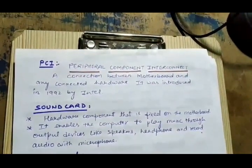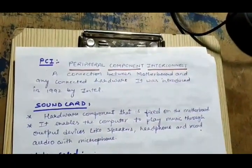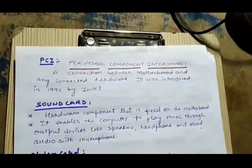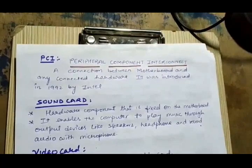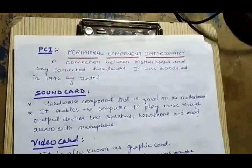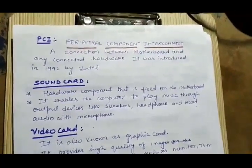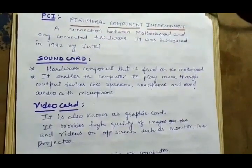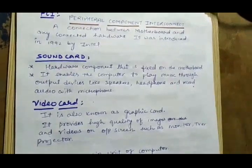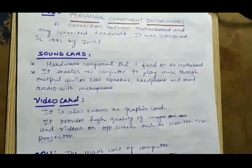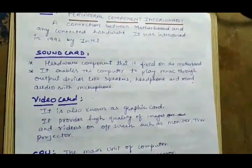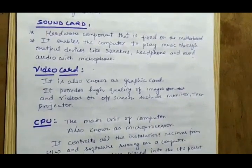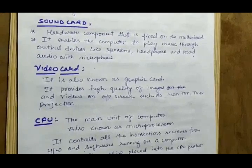PCI slots are connection points available on the motherboard, and we can connect hardware to the motherboard through PCI, such as a sound card, video card, modem, etc. PCI was introduced in 1992 by Intel. The sound card is fixed on the motherboard and enables the computer to play music through output devices like speakers and headphones, and also record voice through a microphone. The video card, also known as a graphics card, provides high-quality images and videos on output screens such as a monitor, TV, or projector.